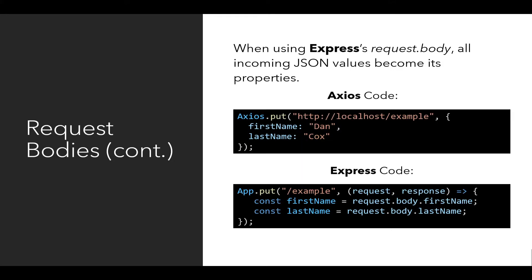As this slide shows, we can write Axios code on the client side using PUT, PATCH, or POST, provide the URL we're sending the data to, and then the data itself as a second argument. In this example, the second argument to the put method is an object with firstName: Dan and lastName: Cox. At the bottom of the slide is the Express code for the server, listening for PUT on the path slash example, corresponding to the Axios code. Axios.put on the client maps to app.put on the server, listening on the path slash example.